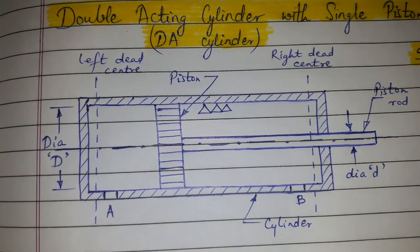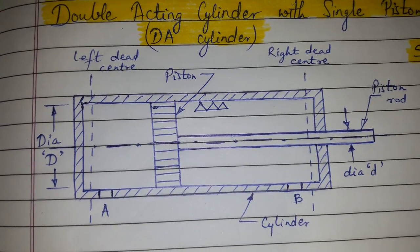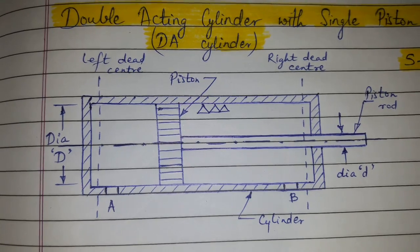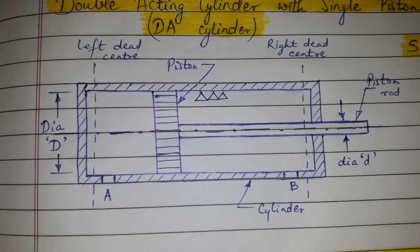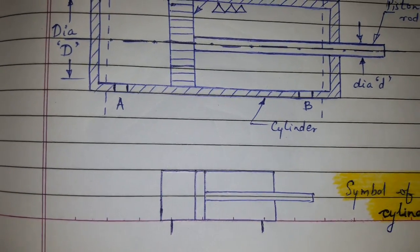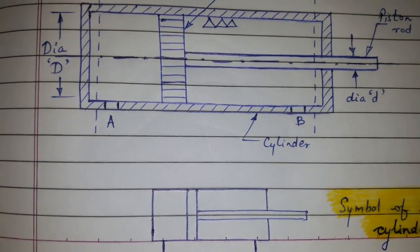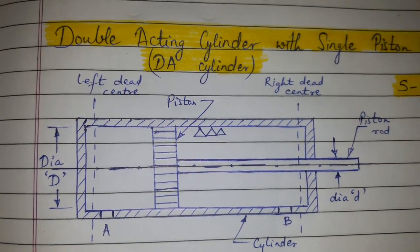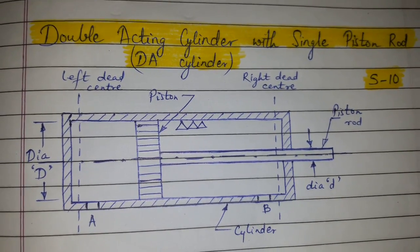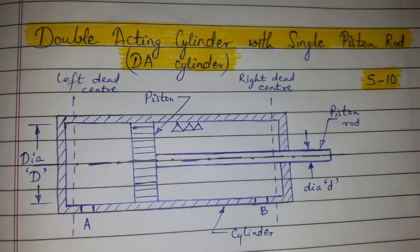In a DA cylinder, both strokes — right to left and left to right — are power strokes, and we can use this power to do useful mechanical work. The symbol of the DA cylinder is shown here. This was the double acting cylinder with single piston rod.